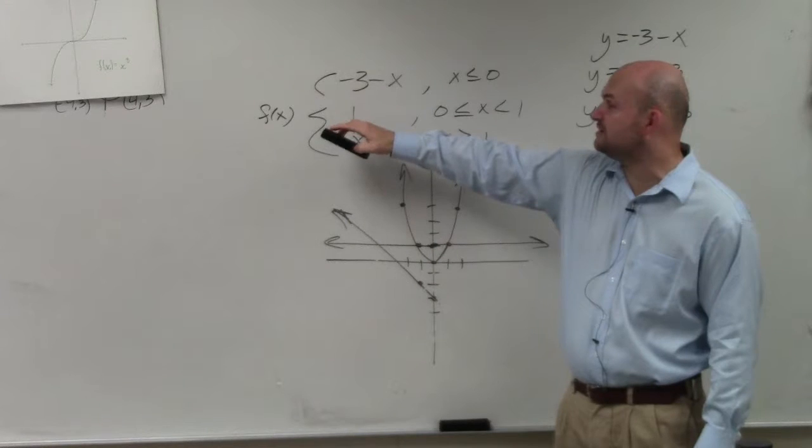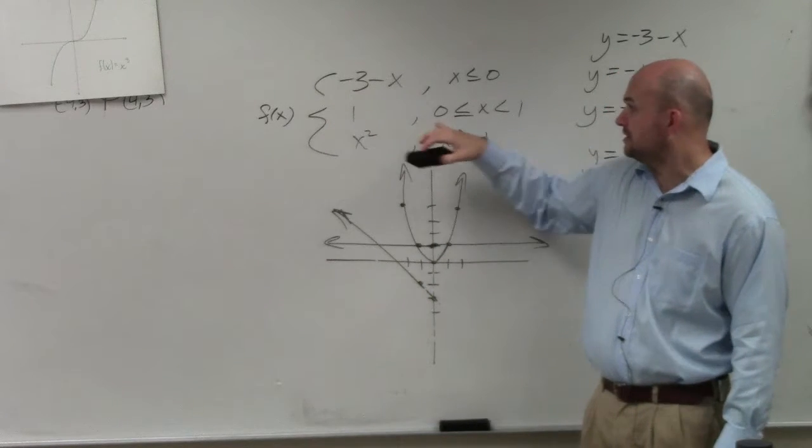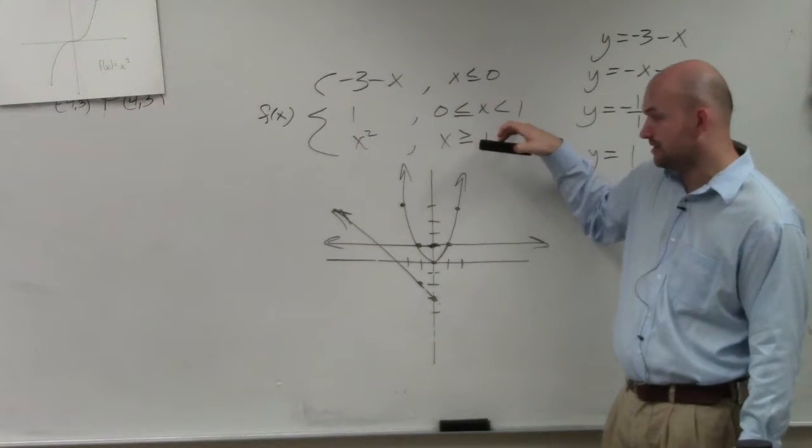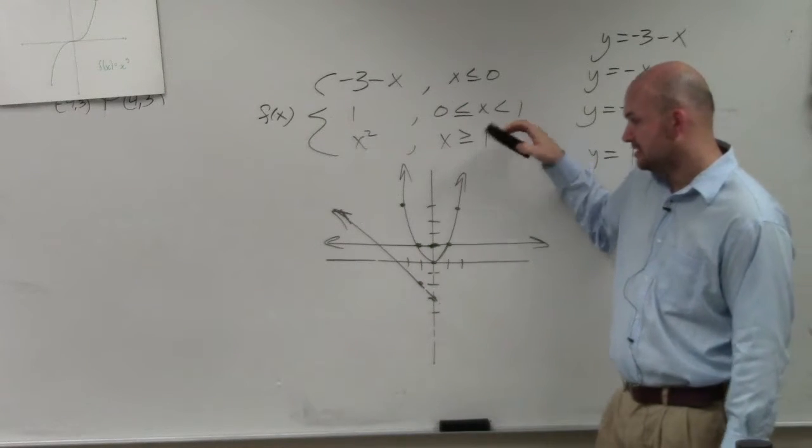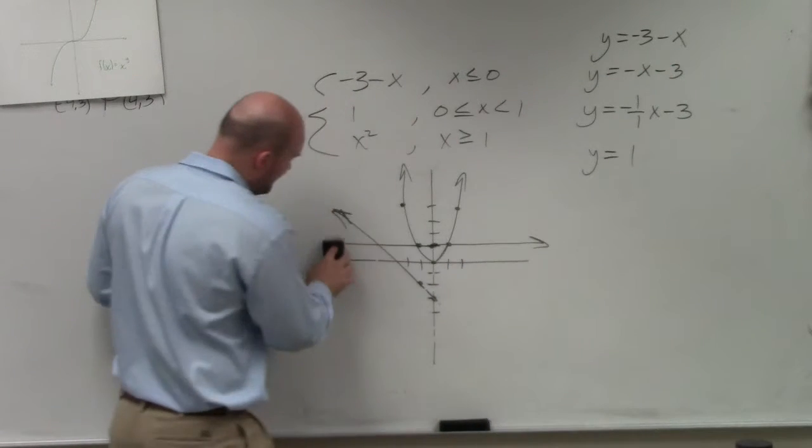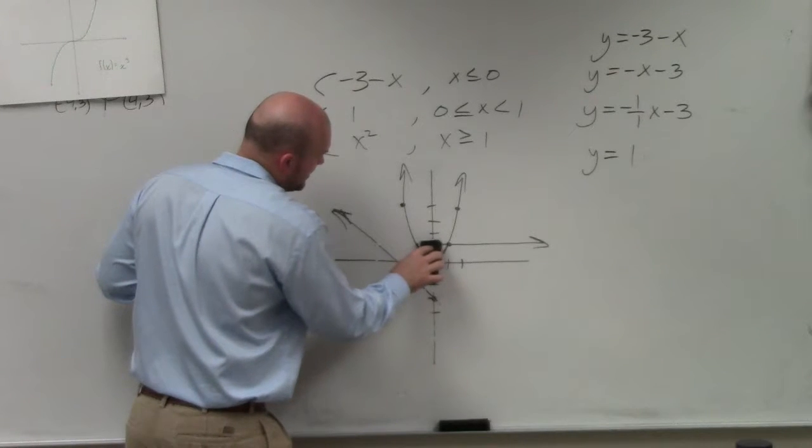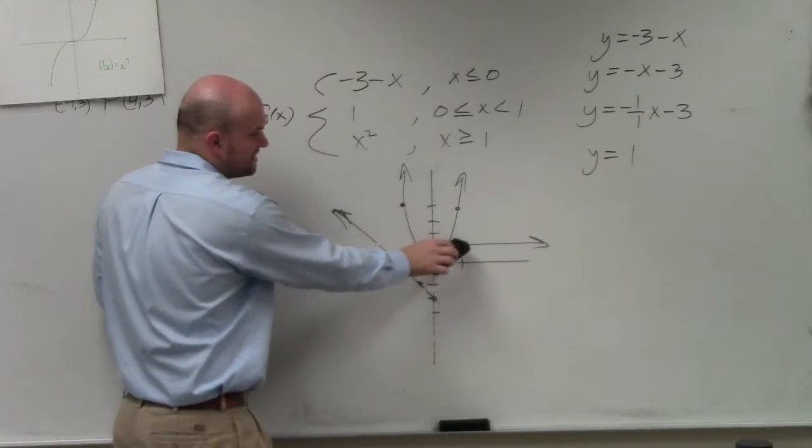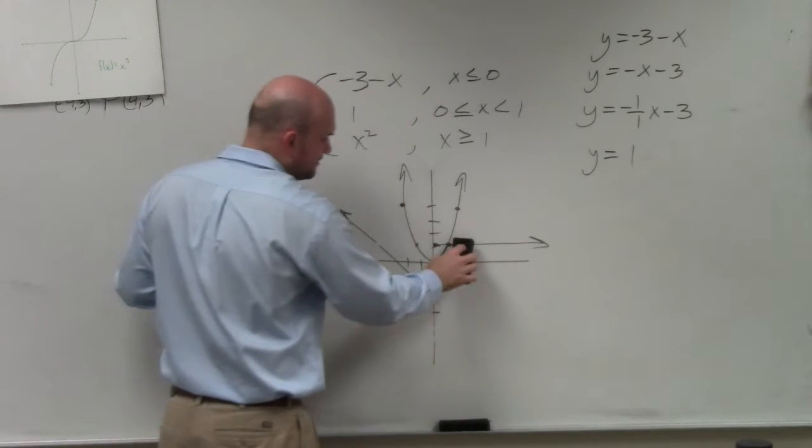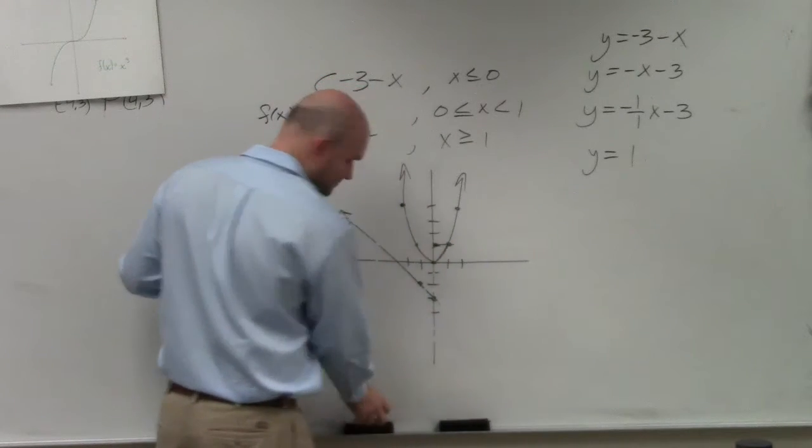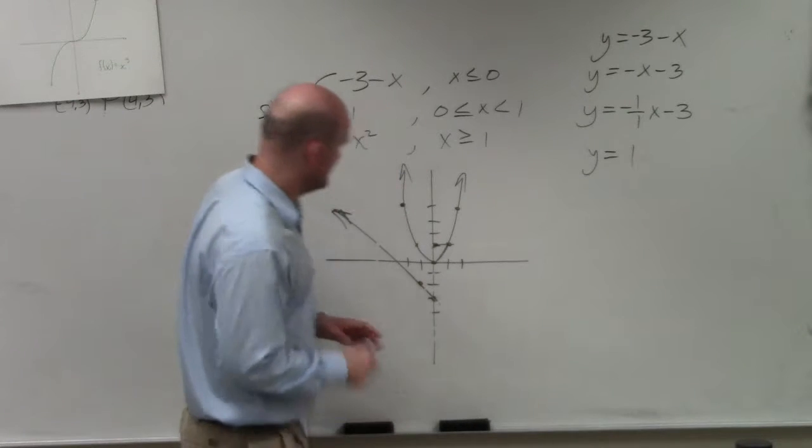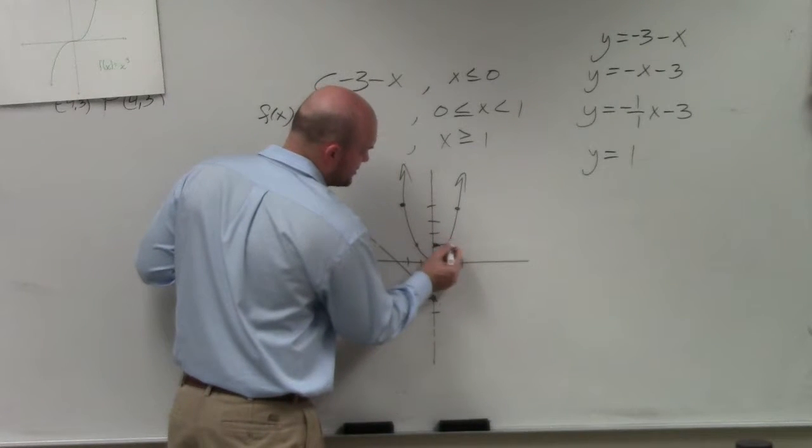Then it says, only graph the number 1, the graph 1, between values of 0 and 1. Right? So everything that's less than 0, I'm going to erase. Everything that's greater than 1, I'm going to erase.